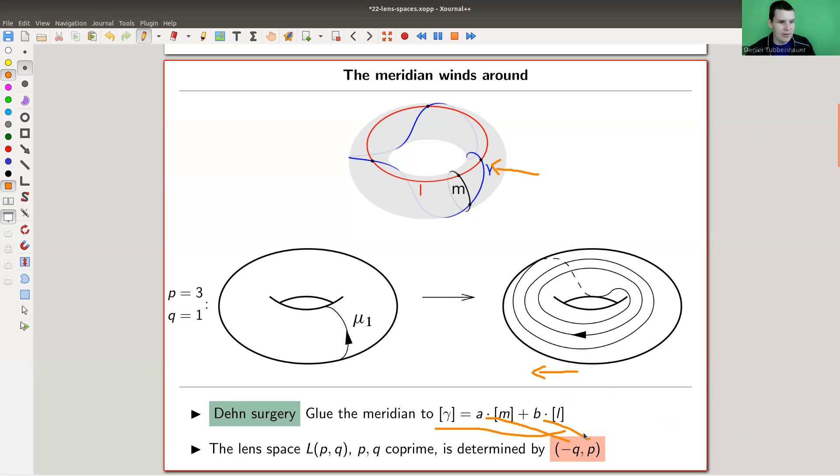This corresponds to this choice of a and b. It just twists, and in this case goes around three times along the longitude and then just one turn along the meridian. p and q are coprime, so in this video p and q will be coprime, for example five and three. The space you get from the Dehn surgery here is called the lens space L(p,q).